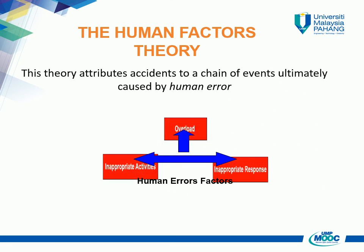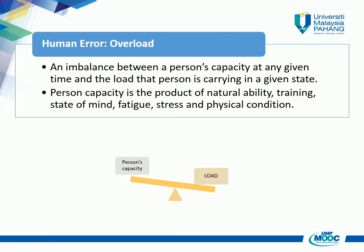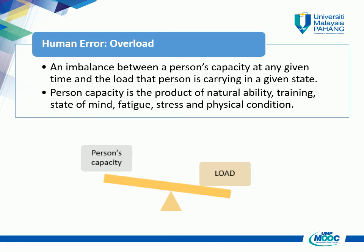The third and last accident causation theory is the human factor theory. This theory attributes accidents to a chain of events ultimately caused by human error. The human errors addressed include overload, inappropriate activities, and inappropriate response. Overload is defined as an imbalance between a person's capacity at any given time and the load they are carrying. A person's capacity is the product of natural ability, training, state of mind, fatigue, stress, and physical condition.